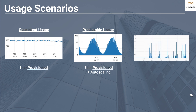In the last example we have random or spiky usage. If you were to use provisioned you have to ask yourself: how do you decide what the provisioned limit should be? We're really jumping all over the place in this example — it's a really hard question to answer. So in this example it makes more sense to use on-demand since it's impossible to predict any consistent usage pattern. This will keep your costs down and your application consistently available.